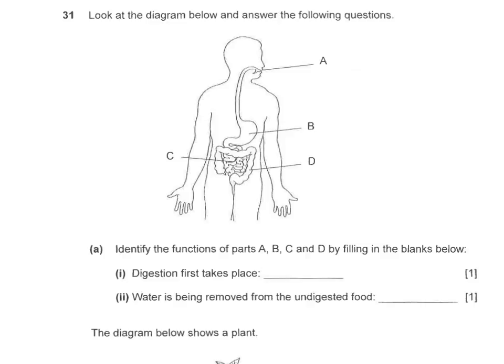In question 31, look at the diagram below and answer the following questions. Identify the functions of parts A, B, C and D by filling in the blanks. Before we begin, let us first identify the names of the different parts. Part A is the mouth, part B is the stomach, part C is the small intestine, and part D is the large intestine.